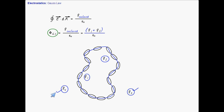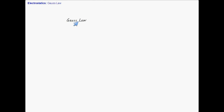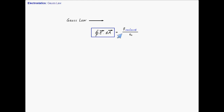In conclusion, Gauss's Law states that the flux linked with any Gaussian surface — any hypothetical three-dimensional closed surface — is equal to q_enclosed divided by ε₀. The total flux linked with the Gaussian surface depends only on the enclosed charges. We will continue the discussion in the next meeting.